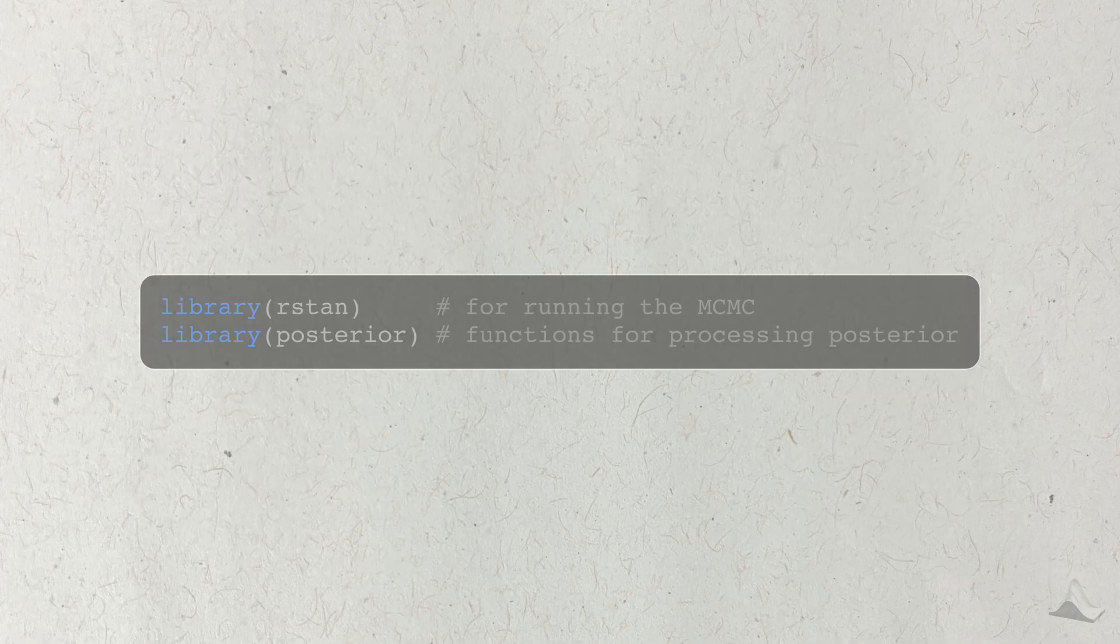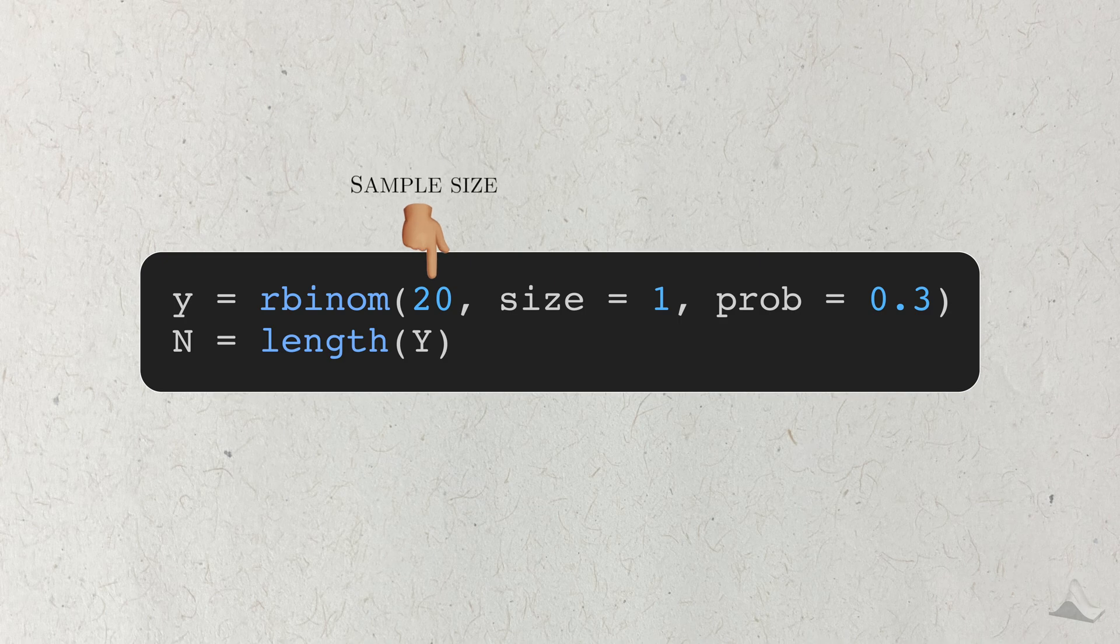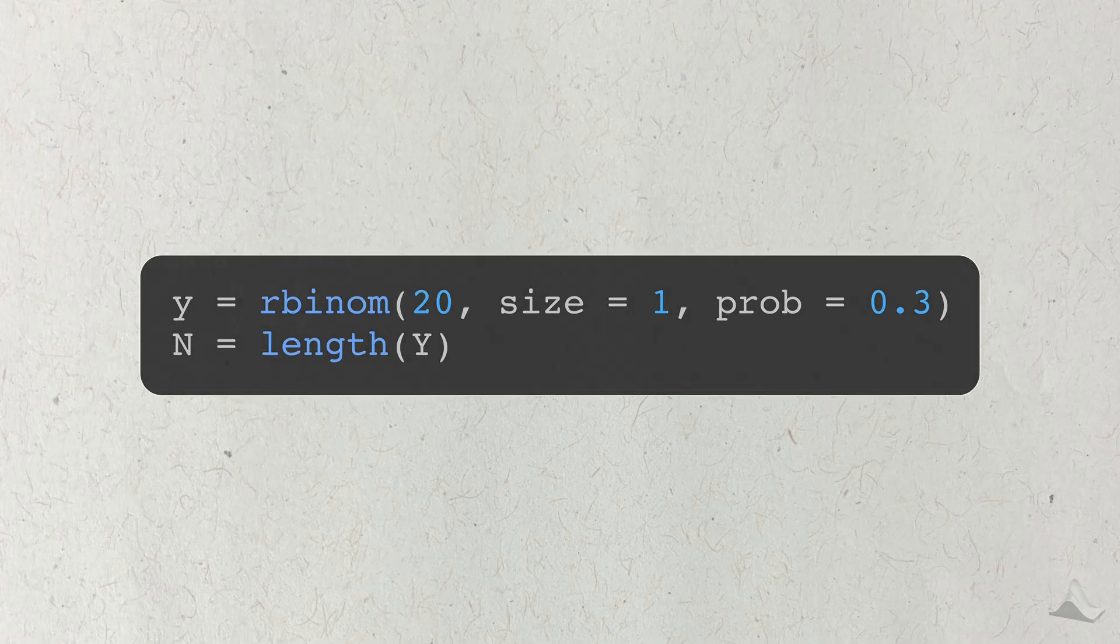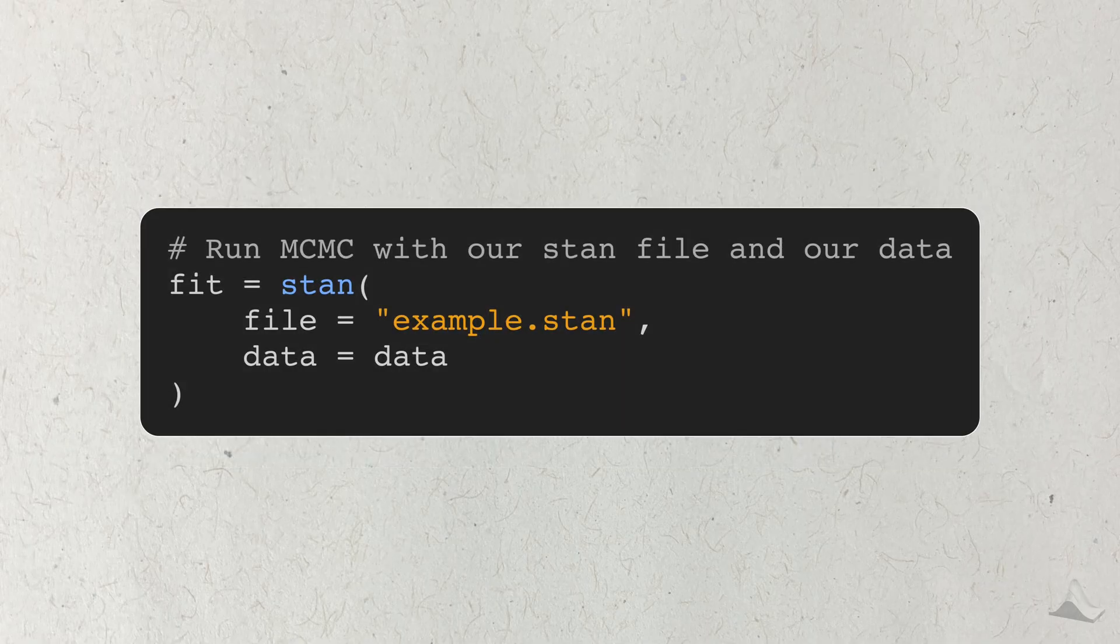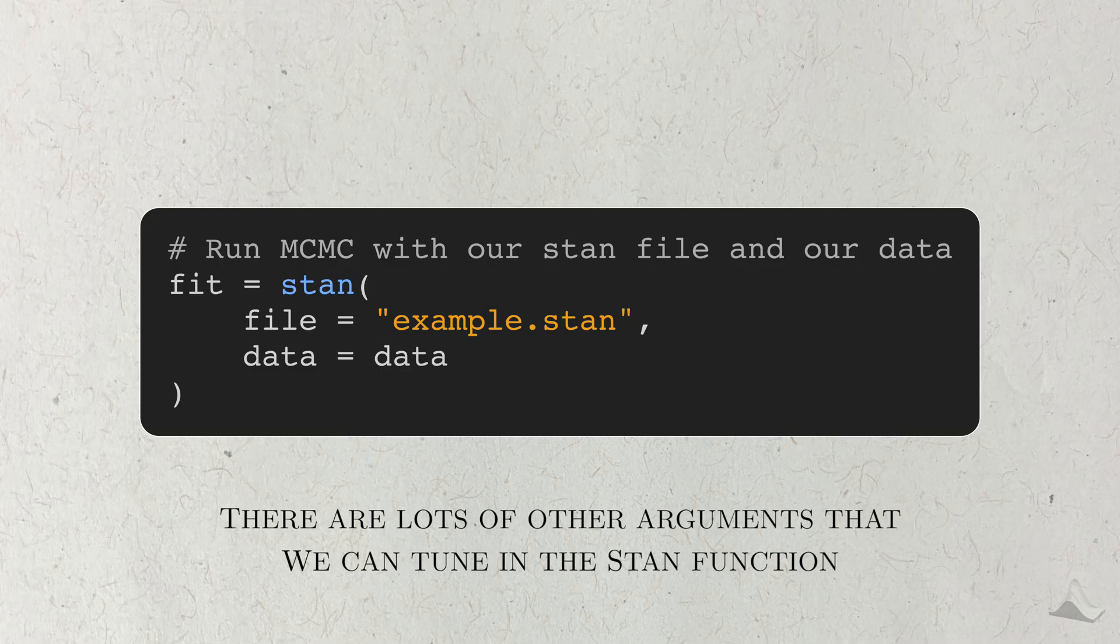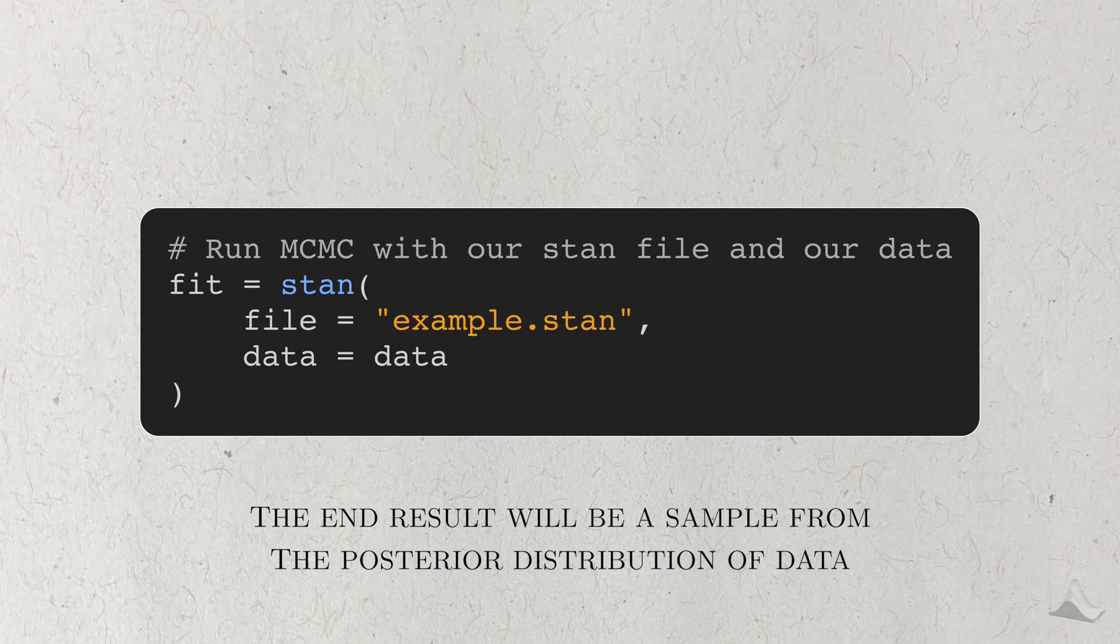To actually run the MCMC and get a posterior distribution, we need to hop back into R. First, I'll bring in two libraries, rstan and posterior. rstan contains the functions that will let us run the MCMC, and the posterior library makes it easier to work with the sample. I'll generate the binary data with the rbinom function, where I've programmed it to produce 20 Bernoulli trials. I've set the value of theta equal to 30%, and you'll see this reflected in the posterior distribution. Before we give it to STAN, we need to prepare it to match the specifications of the data block we wrote in the STAN program. This is normally done with a named list, so I'll make one and name it data. We're going to take both this list and the STAN program we wrote and stick them into a function called stan. There are lots of other parameters that I can tune in the stan function, but this will be enough for now. If I run this, you'll be able to see the MCMC algorithm run in real time, and we'll finally get what we wanted, a sample from the posterior distribution.